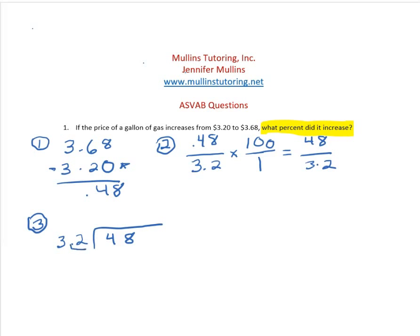So now 3.2 is 32. To make this equation stay balanced, we also must do the same thing inside. We're taking the decimal that would be here and move it over one place and add a zero. So now we have 32 into 480.